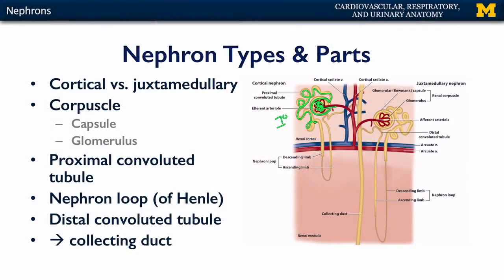The proximal convoluted tubule is the primary site of reabsorption for the nephron, so a lot of materials leave the filtrate and go back into the cardiovascular system here. There's also a minimal amount of secretion there. From the proximal convoluted tubule, we move into the nephron loop. The nephron loop has a descending and an ascending limb, and it is good for catching the last bits of water in the filtrate that we want to reabsorb back into the cardiovascular system.